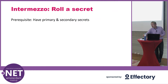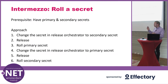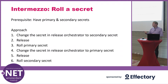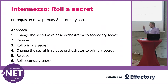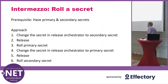Rolling secrets with this approach requires primary and secondary secrets — something you get out of the box for almost every Azure service using keys. You only use the primary secret in your application. When you need to roll, you switch to the secondary, do a release, then change the primary secret, put it in your release orchestrator, do another release, and then roll the secondary. That's quite a procedure — if your release takes 10 minutes and build takes 5, you're close to an hour. You don't want to do that every week. This is suboptimal, but it's what you can do.